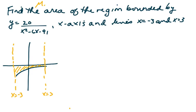This is MML problem 7.5.53. You're asked to find the area of the region bounded by the curve y equals 20 over x squared minus 6x minus 91, the x-axis and the lines x equals negative 3 and x equals 3.